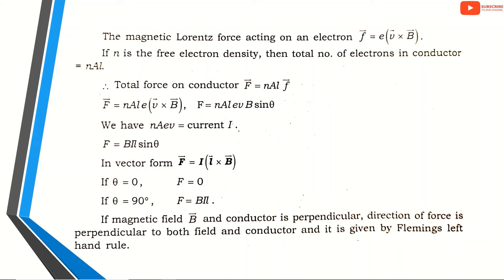If the magnetic field B and the conductor are perpendicular, the direction of force is perpendicular to both the field and the conductor, and it is given by Fleming's left-hand rule.